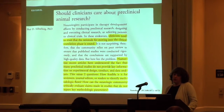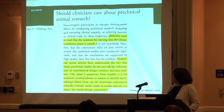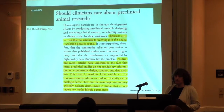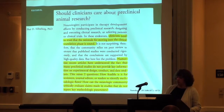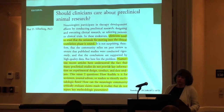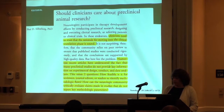A question that came up at NINDS was: should clinicians really care about pre-clinical animal research? Clinicians really need to be able to trust that the rationale for moving forward into a clinical trial is sound. Many articles have underscored that pre-clinical studies don't provide key information on the design, conduct, and data analysis. How feasible is it for reviewers, journal editors, or readers to identify methodological flaws when the details aren't even presented? And how can the neurologic community critically evaluate claims when key methodological parameters aren't included?